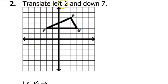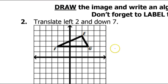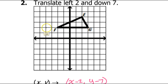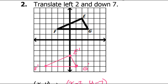For number 2, we need to translate left 2 and down 7. Left 2 and down 7 means we're going to do x minus 2 and y minus 7. Since we have a graph, we can just move these points around. Taking point f and moving left 2 and down 7 gives f prime. Doing the same for point g gives g prime, and for point e gives e prime. Then we just connect those dots.